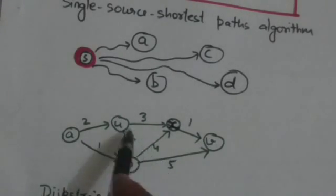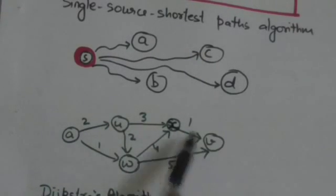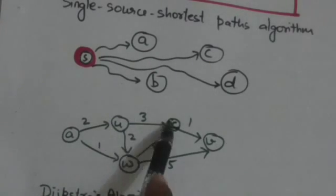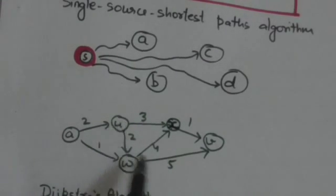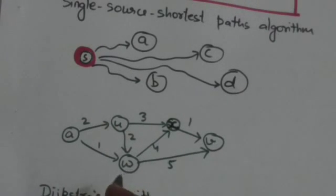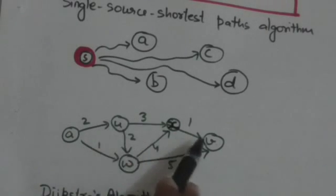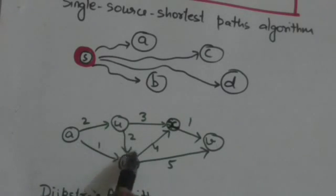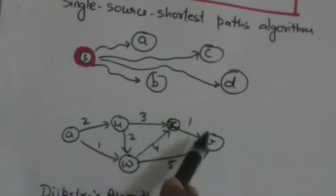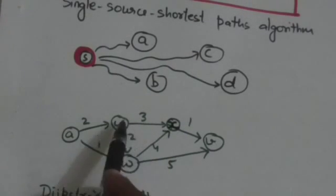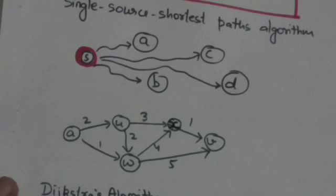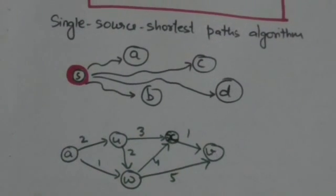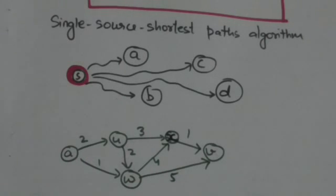There are many paths from vertex u to vertex v in a graph — for example, u→w→x→v and u→w→v. The path with minimum weight between vertices u and v is the shortest path between them. So in a single source shortest path problem, we have to find the shortest path from a given source vertex to each vertex of the graph.